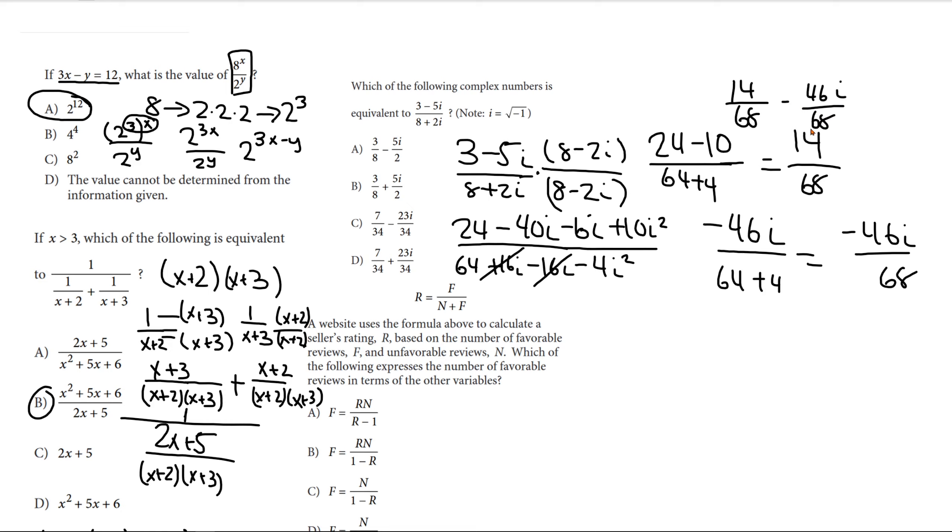And each of these can be divisible by 2. So, let me just do that. 7 over 34 minus 23i over 34 again. So now, we can't divide it anymore since 7 is not divisible by 2. So, this is our answer choice.